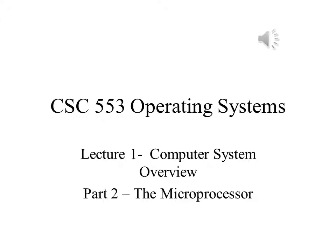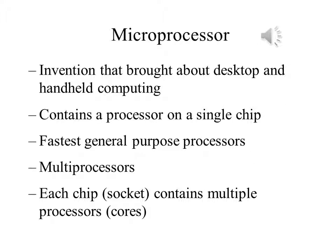In Part 2 of Lecture 1, we will discuss the microprocessor. The hardware revolution that brought about desktop and handheld computing was the invention of the microprocessor, which contained a processor on a single chip, though originally much slower than multi-chip processors. Microprocessors have continually evolved to the point that they are now much faster for most computations due to the physics involved in moving information around in sub-nanosecond timeframes.